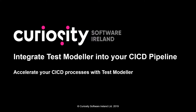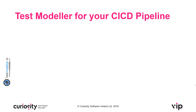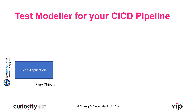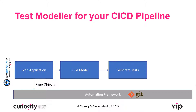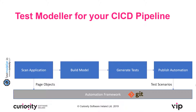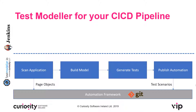In this video, we'll be looking at how Test Modeler can be integrated into your CI/CD pipeline to help accelerate your CI/CD processes. We're going to use Test Modeler to scan the application and automatically create page objects inside our automation framework hosted in Git. We're then going to build a model of the application, generate coverage-focused test cases, and finally publish automation and the associated automation code automatically back into our automation framework. We'll be using Jenkins as our CI/CD engine.